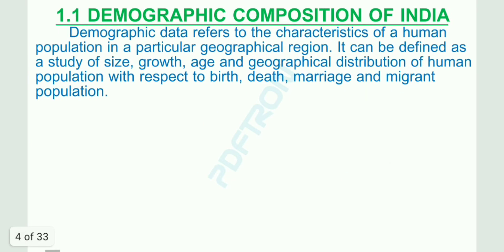1.1 Demographic Composition of India. Demographic data refers to the characteristics of a human population in a particular geographical region. It can be defined as a study of size, growth, age and geographical distribution of human population with respect to birth, death, marriage and migrant population.